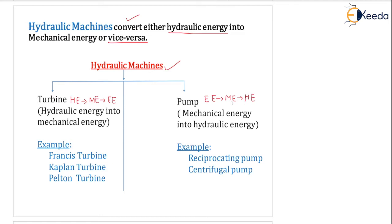This is the chain of transformation of energy. In this chapter we are going to focus on the conversion of hydraulic energy into mechanical energy for turbines, and mechanical energy to hydraulic energy for pumps — the electrical part is not in our scope. Examples of turbines are the Francis turbine, Kaplan turbine, and Pelton turbine, with the Pelton being very important. Examples of pumps include the reciprocating pump, rotary pump, and centrifugal pump.